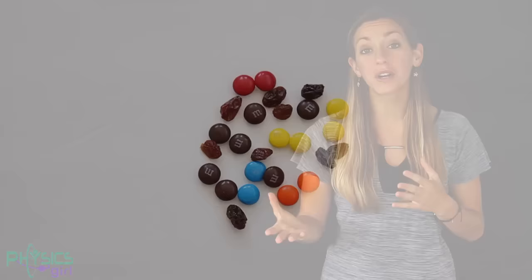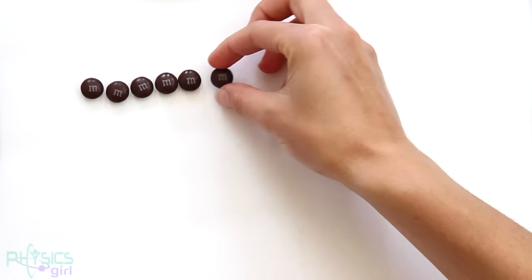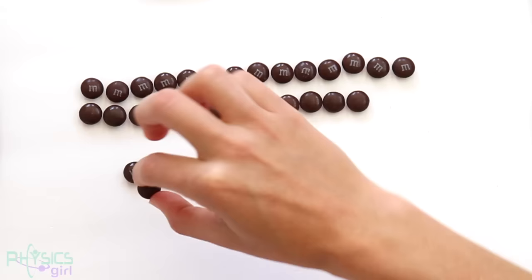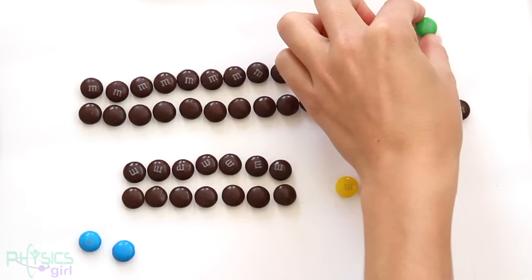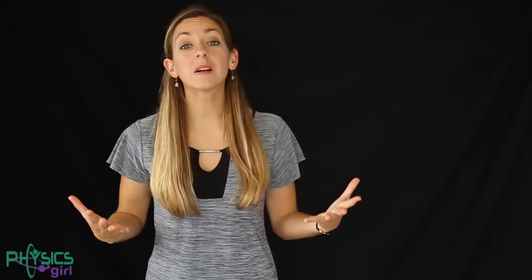And nothing is violated as quark-anti-quark pairs pop in and out of existence. But there are a few other constraints. The total number of up quarks must be two more than the anti-up quarks, and there must be one more down quark than anti-down quarks, so that the valence quarks come to a total of three. And the quark-anti-quark pairs of other types must all cancel out, like the top quark, and the charm quark, and the strange quark, and the bottom quark.